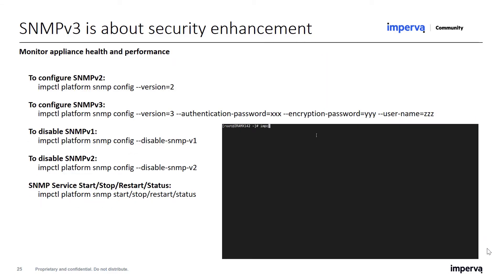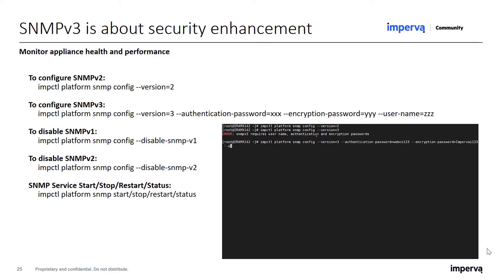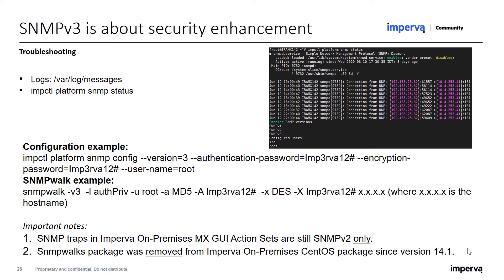Here you can see the IPCTL commands that were added to configure SNMP v3 using CLI, and to disable v1 and v2 to enhance security. I will also provide these commands in text below this video for easier reference. You can see commands to configure SNMP v2 and v3 according to the security levels, how to disable SNMP v1 and v2, and how to check the status of the service to start, stop, or restart it. For troubleshooting, you can find logs under /var/log/messages on the device configured for SNMP monitoring. The command IPCTL platform SNMP status shows the status of the service, configured versions, and last logs. TCP dump can also be useful for troubleshooting.